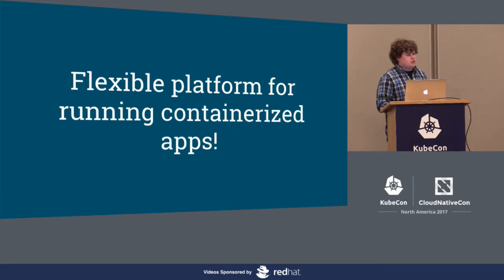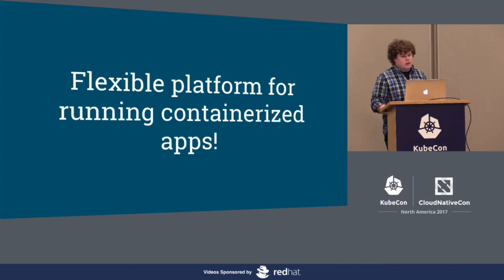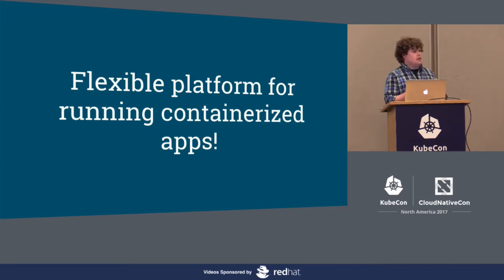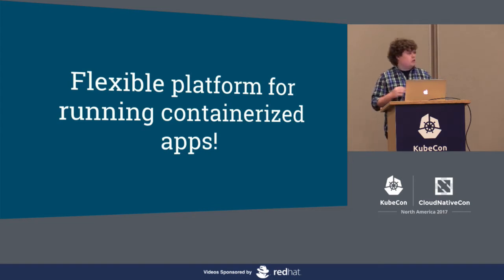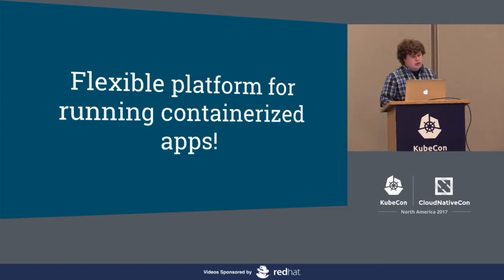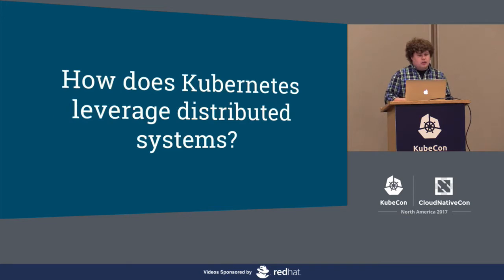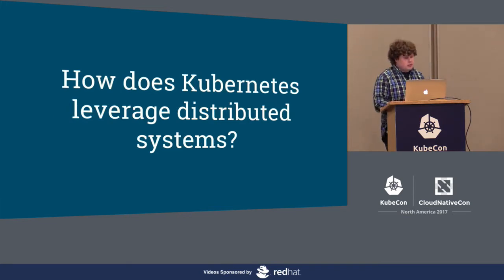Kubernetes provides capabilities greater than just 'hi, I'm a container, please run me.' It's got a really awesome feature set — it can handle rolling deploys, do load balancing, add health checking, all sorts of stuff. A lot of talks cover how Kubernetes does these things, but I want to peek behind the curtain and see how the components of Kubernetes work together to achieve them. My question for us today is: how does Kubernetes leverage distributed systems?